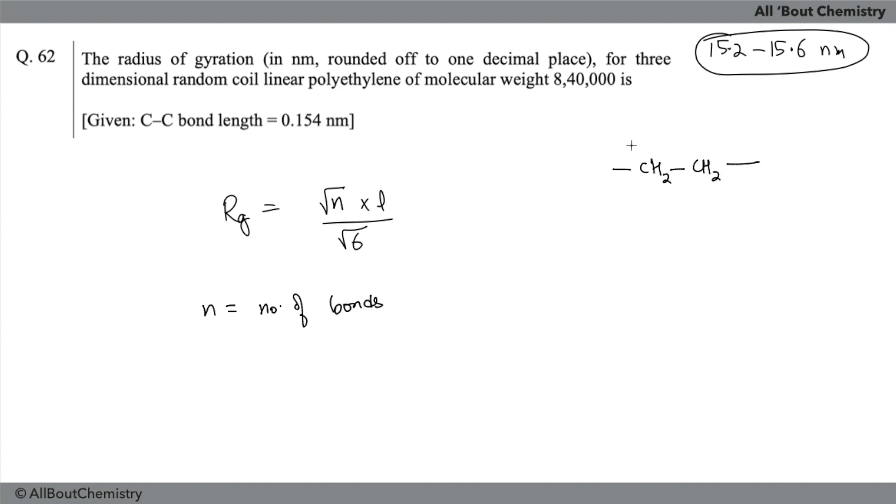In polyethylene, the molecule is CH2-CH2 and this will go like n times. Number of bonds is what you have to calculate, and number of bonds will be equal to 2 × DP. DP is degree of polymerization. That's how you will calculate the number of bonds. This will be equal to 2 times degree of polymerization, which is calculated as total mass divided by mass of the single monomer.